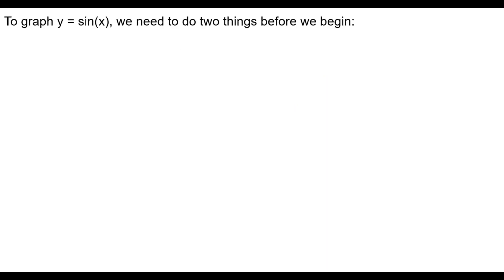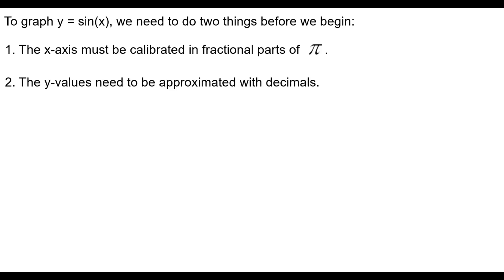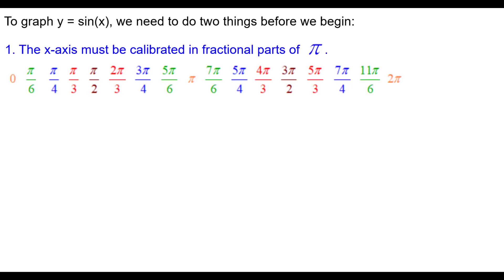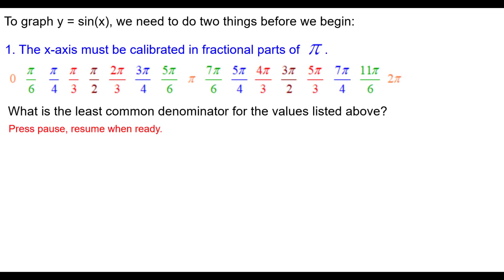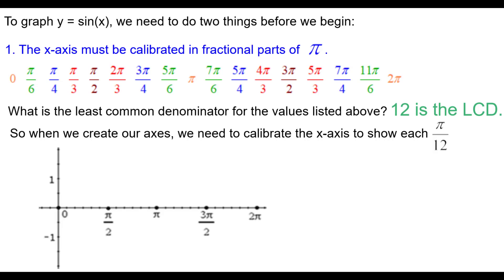To graph y equals the sine of x, we need to do two things first. The x-axis must be calibrated in fractional parts of π, and y-values like √3/2 and √2/2 need to be approximated with decimals. The unit circle values we need all have a least common denominator of 12, so we calibrate the x-axis to show every π/12.